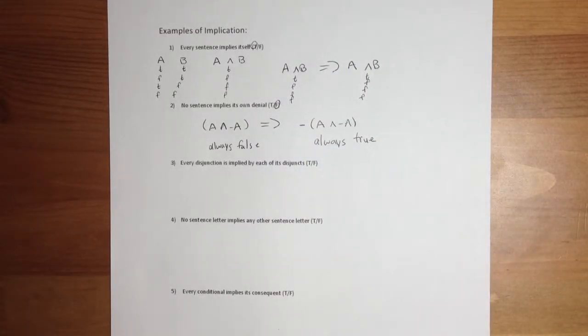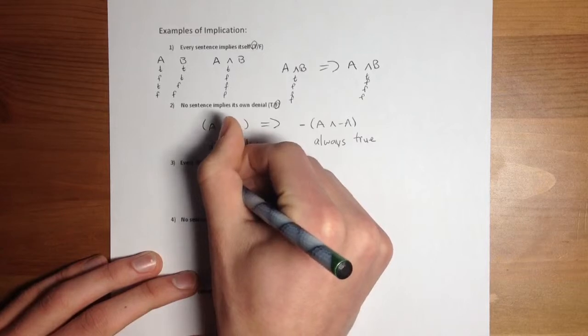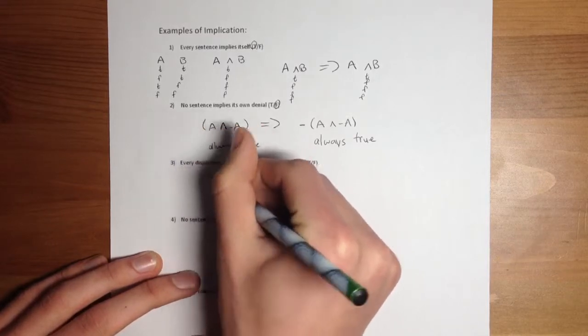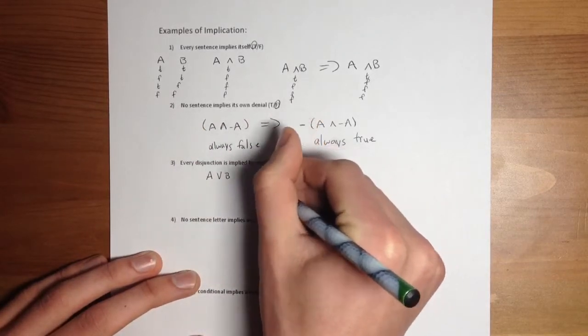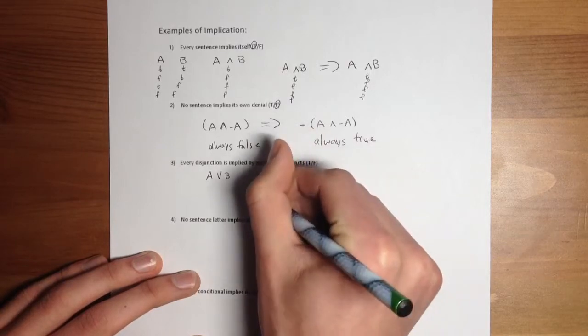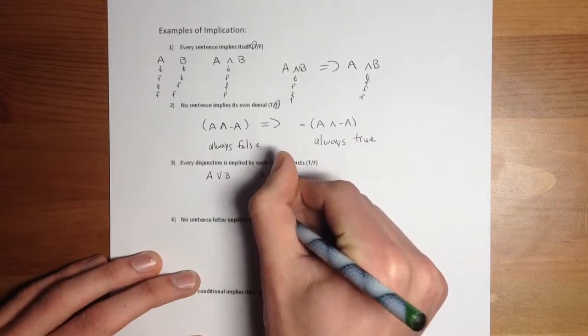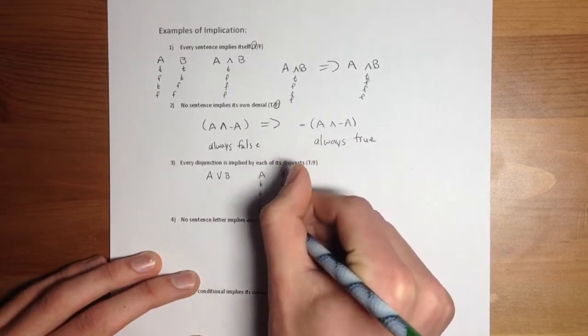Okay, so here we're going to be looking at every disjunction is implied by each of its disjuncts. So here, this is a disjunction here, and A and B. We're going to draw the truth table again. You get tired of drawing truth tables, but they do help.